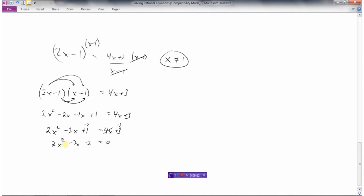So we've got 2x squared minus 7x minus 2 equals 0. This is not a nice one to factor.